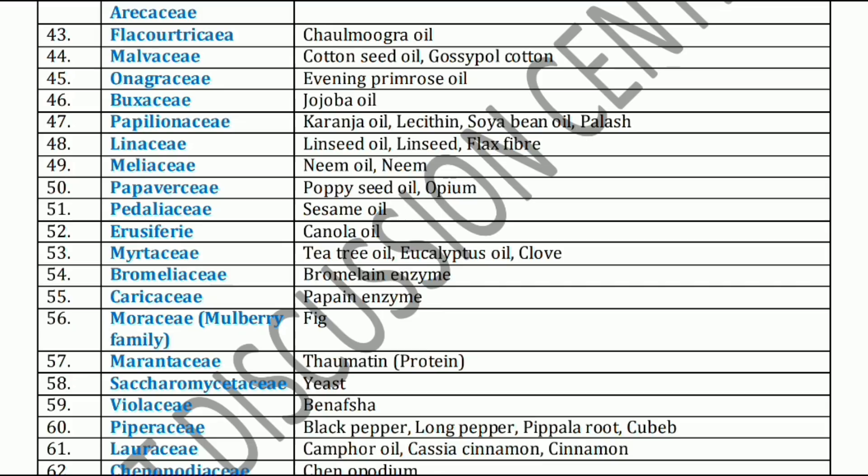Papaveraceae is mainly associated with Papaver somniferum, or Opium. Next, Pedaliaceae family. Pedaliaceae family has Sesame oil. Next, Eurospheria family. Eurospheria family has Canola oil.